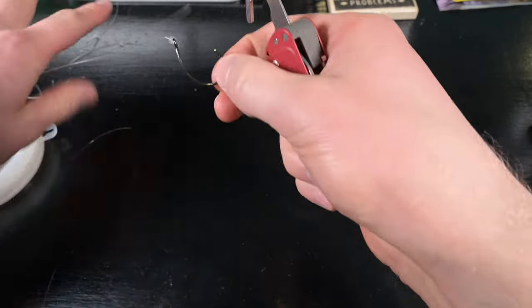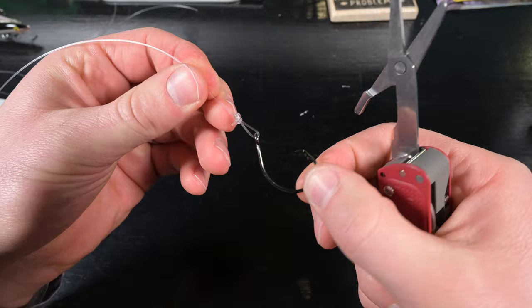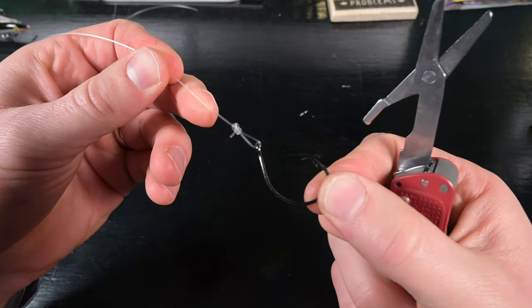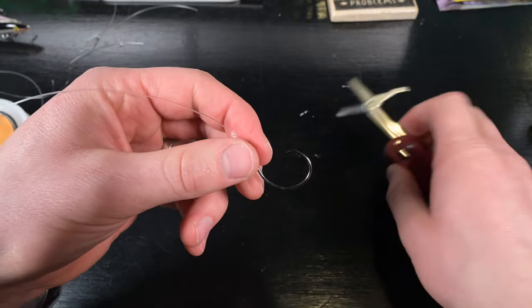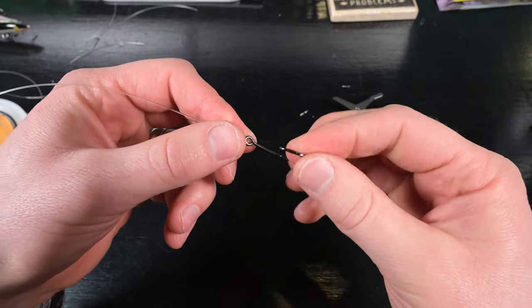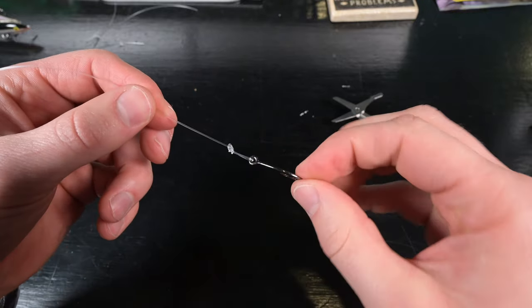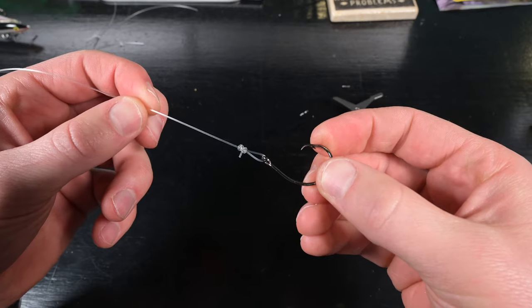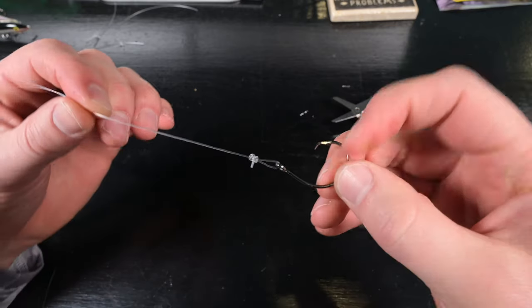When it comes to live bait fishing, it's hard to beat this setup. You just put a greenback or a shiner on there, pinfish, throw pinfish on that, and just free-line it. You can catch a lot of fish with this rig.